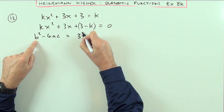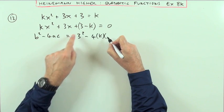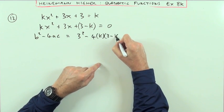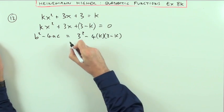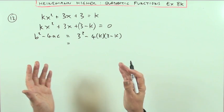Well, b is 3, so I've got 3 squared. 4 times a is k, and c is the constant at the end, 3 minus k. Not equal to anything, it's just an expression, and I'll wait to see if I can see that it's either going to be positive or negative or whatever.